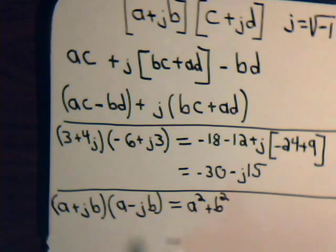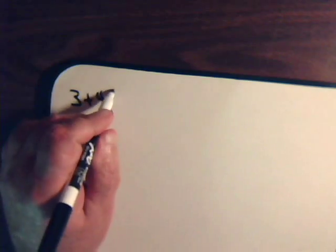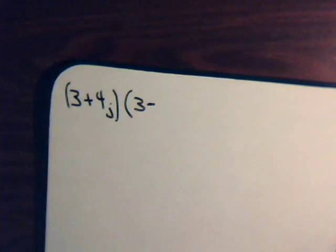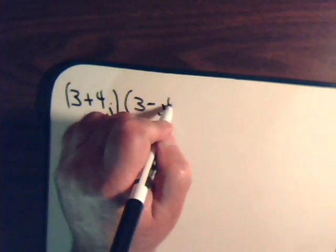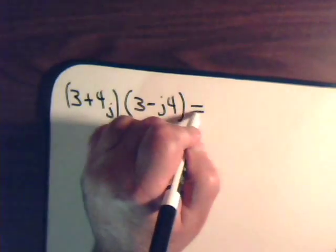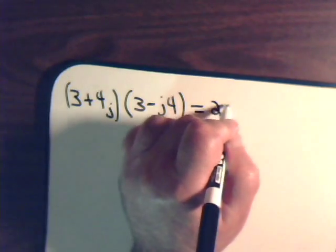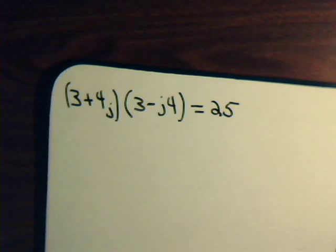We can use this fact when dividing two complex numbers. For example, take 3 plus 4j and multiply it by its complex conjugate 3 minus 4j. That simply equals 9 plus 16, which is 25. With the complex conjugate, we're always guaranteed to get a real number.